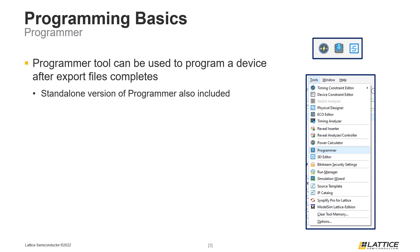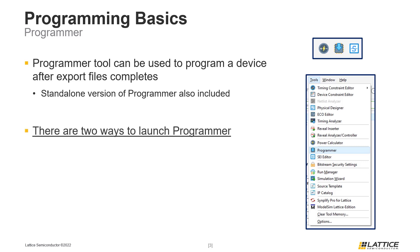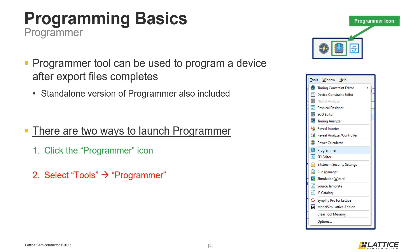The main difference between the two versions of the programmer tool is that launching it from Radiant will generate a programming project and will pre-populate some fields of the programmer, while the standalone version will not pre-populate or generate anything and requires more user selections to begin programming a device. There are two ways to launch the programmer tool from Radiant. The first way is to click the programmer icon from Radiant's toolbar. The second way is to select Tools from Radiant's menu bar and then Programmer from the drop-down that appears. Both methods will open the programmer tool in a separate window.